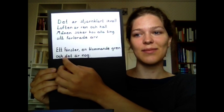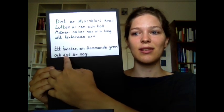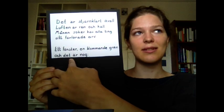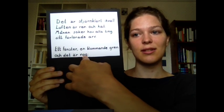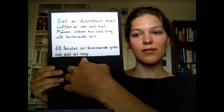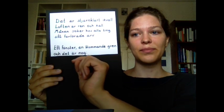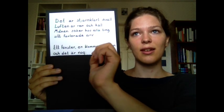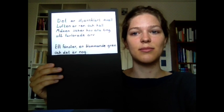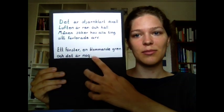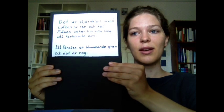Det — you can see it's the same sort of abstract neuter 'it', det. Är nog — 'is enough'. Like if you take 'enough' and take away the e, the u, and the h, it becomes nog. So that's easy to remember. And that is enough: det är nog.